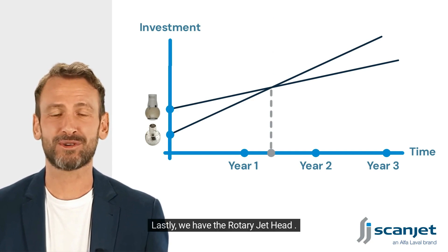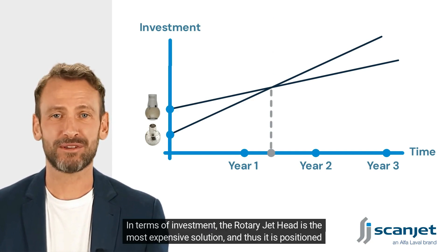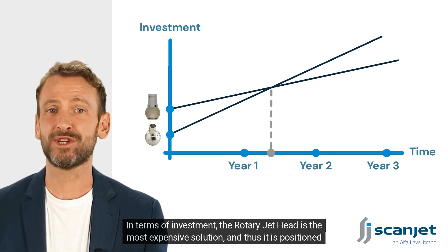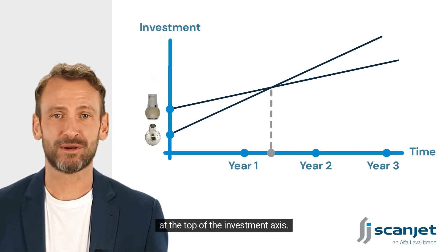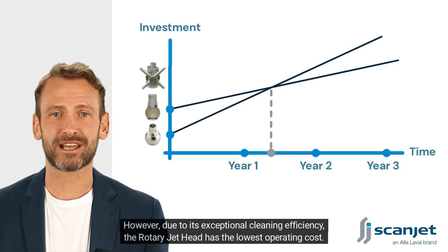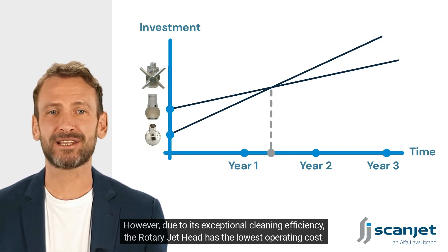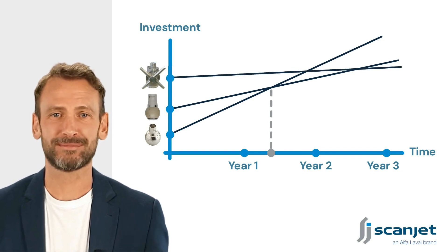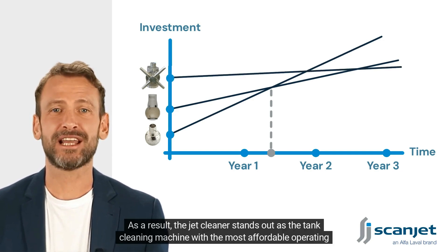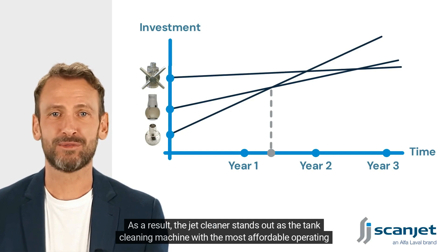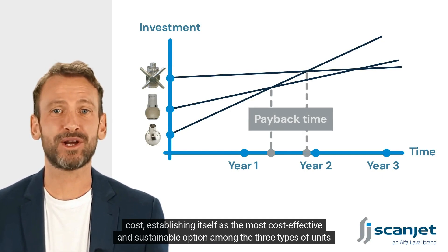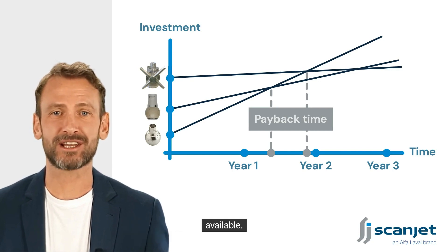Lastly, we have the rotary jet head. In terms of investment, the rotary jet head is the most expensive solution and is positioned at the top of the investment axis. However, due to its exceptional cleaning efficiency, the rotary jet head has the lowest operating cost. As a result, the jet cleaner stands out as the tank cleaning machine with the most affordable operating cost, establishing itself as the most cost-effective and sustainable option among the three types of units available.